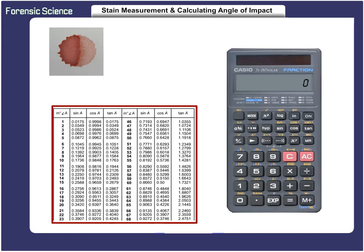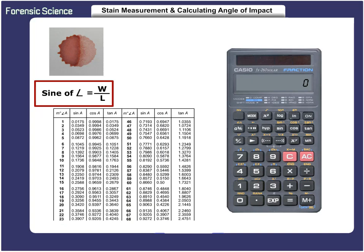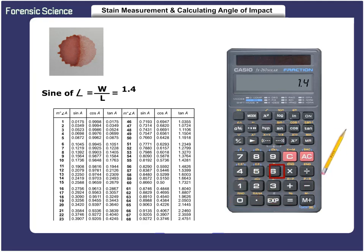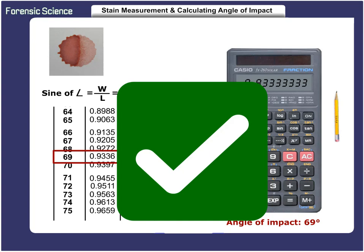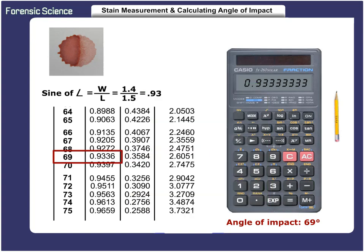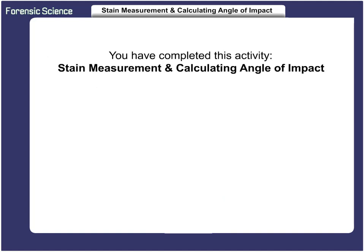Finally, let's use the trigonometric table instead of a calculator to determine the angle of impact. Use the formula previously mentioned: the sine of the angle equals the width divided by the length. On your calculator, enter the width of 1.4 millimeters, and then divide that number by 1.5 millimeters — the length. This will equal 0.93, which is the sine of the angle. Now go to the trigonometric table and find 0.93, which is a 69-degree angle of impact. You have now seen how to measure stains and calculate the angle of impact of different shaped stains. Congratulations, you have completed this activity: Stain Measurement and Calculating Angle of Impact.